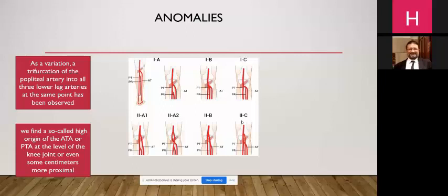As regards anomalies, a variation and trifurcation of the popliteal artery into all three lower leg arteries at the same point has been observed — this is anomaly 1b. We also find a high bifurcation of the anterior tibial artery.